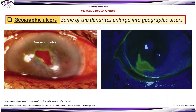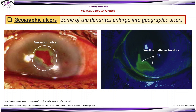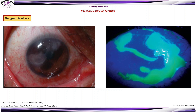Geographic ulcers of infectious epithelial keratitis: some of the dendrites enlarge into geographic ulcers. These ulcers may have an amoeboid shape, and like dendrites they can be stained with rose bengal. Here we can see swollen epithelial borders, and in this image the dendritic ulcer extends centrally. Geographic ulcers usually occur when the epithelialized cells around the dendritic ulcer are cast off. Here is a large geographic ulcer.